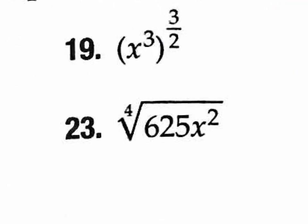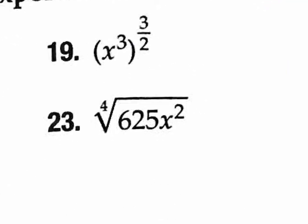Let's do number 19. A radical — a square root or any type of root — is going to end up being a rational exponent, and vice versa. A rational exponent is a fraction as an exponent; the top number is the power and the bottom is the root. For this problem, you can use rule 2 — power to a power, multiply. Putting 3 over 1 and multiplying: 3 times 3 is 9, 1 times 2 is 2, giving you x to the 9/2.